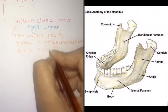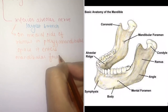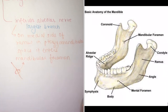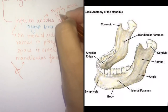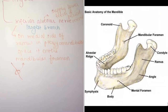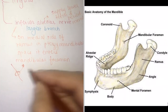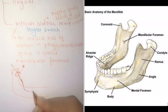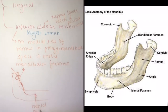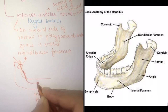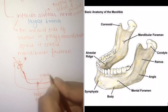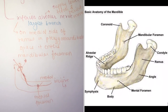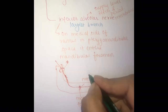The inferior alveolar nerve is the largest branch of the posterior division. On the medial side of the ramus in the pterygomandibular space, it enters the mandibular foramen — the pterygomandibular space being the landmark for the inferior alveolar nerve block. It supplies all the lower teeth and the periodontal membrane. It travels through the mandible, reaches the mental foramen, and exits as two terminal branches: the mental nerve and the incisive nerve. The incisive nerve supplies the canines (cuspids) and incisors.